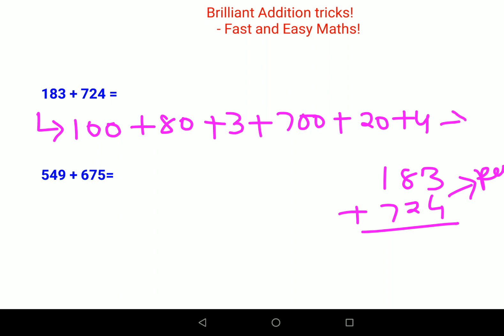This method helps you do this orally. Let's try: 100 plus 700 gets you 800, and 80 plus 20 gets you another 100, so 800 plus 100 gets you 900, plus 3 plus 4 gets you 7. Final answer is 907.